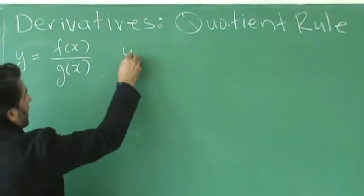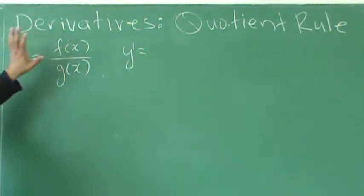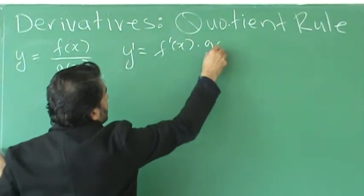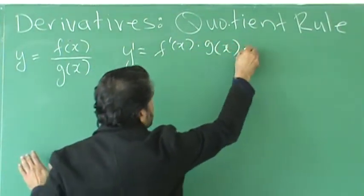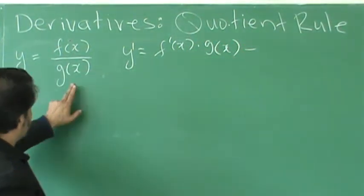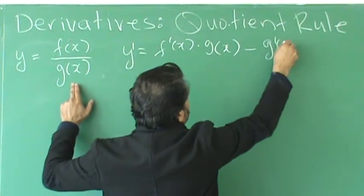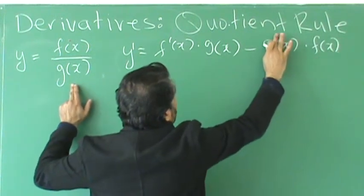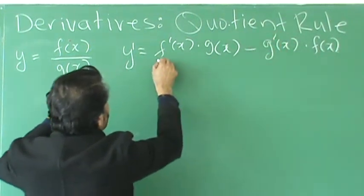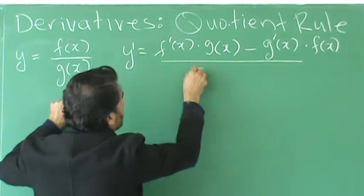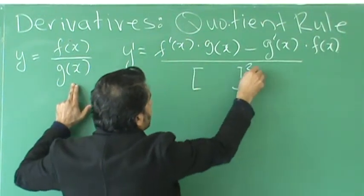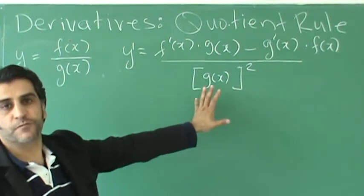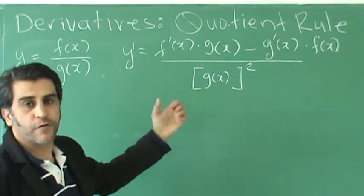So y prime would equal to, we take the derivative of that top first, multiply by the bottom, and then we subtract, taking the derivative of the bottom, multiply by the top, and we square at the bottom, whatever it is. This is the quotient rule, a general form for the quotient rule.